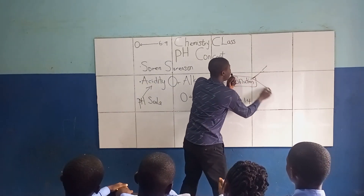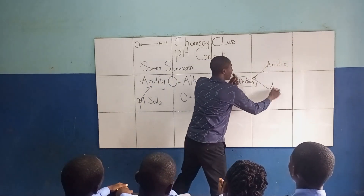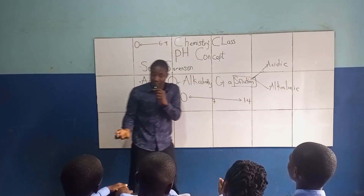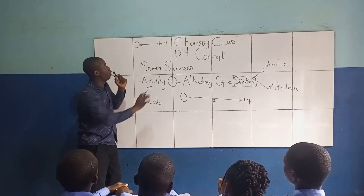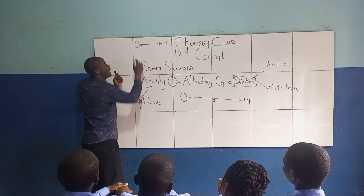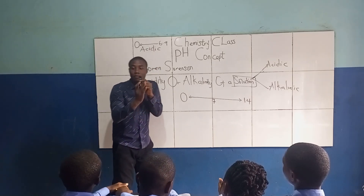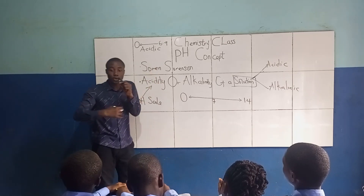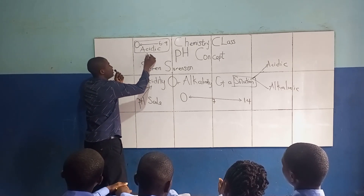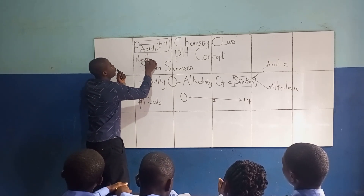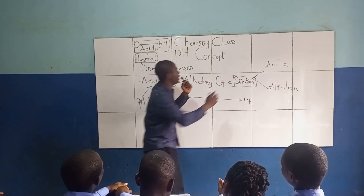...a solution can be either acidic or alkaline — and alkalinity is also referred to as basic. When we have a value ranging from 0 to 6.9, we say that the solution is acidic. When the value on the pH scale is exactly 7, we say that solution is neutral.